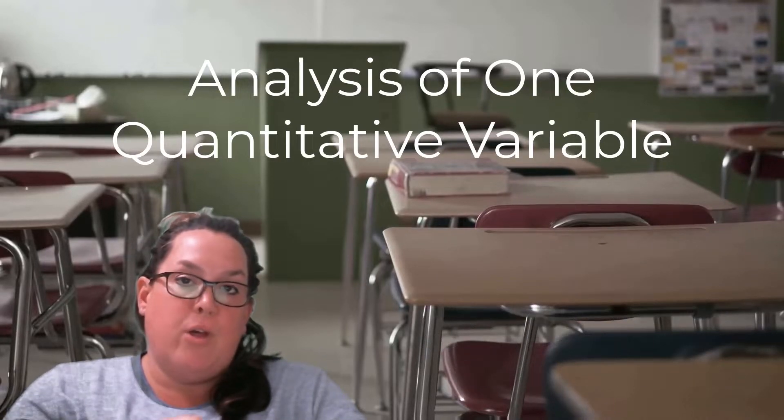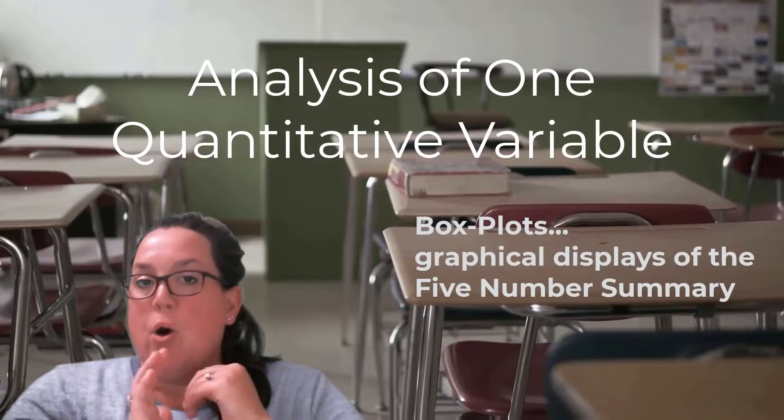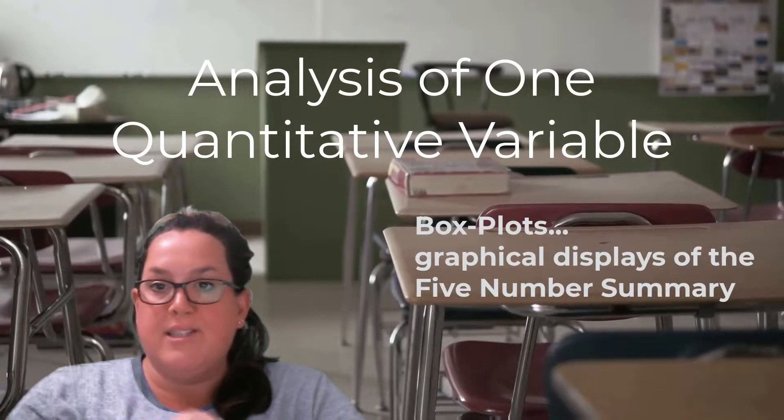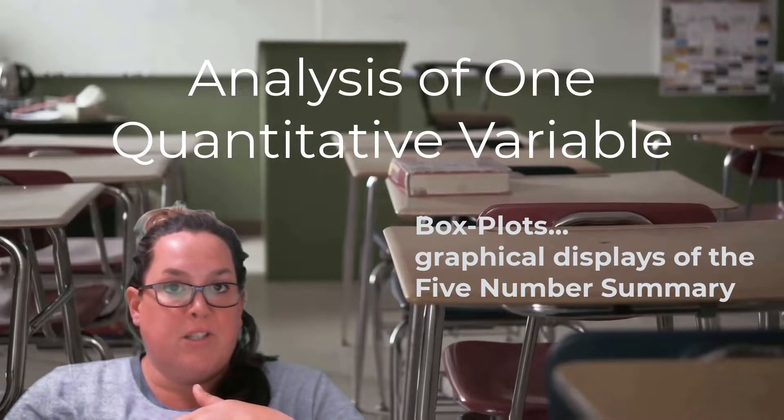Then we talked about the graphical display for the five number summary, which is the box plot. We looked at lots of different box plots, outliers, and where those values for the five number summary were.